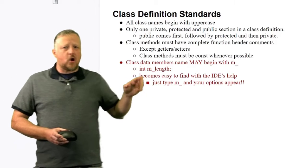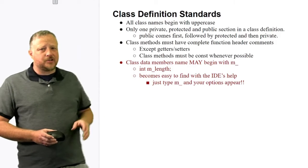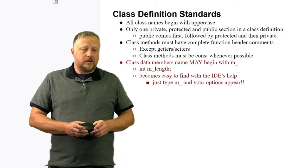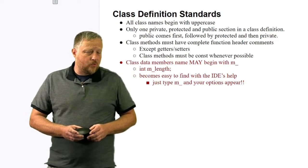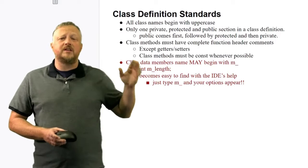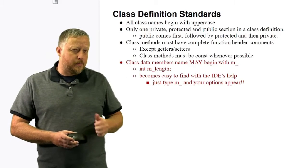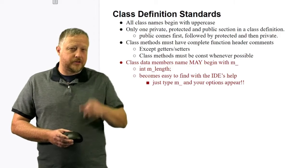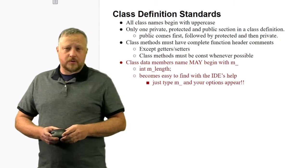Now, there's only one private, protected, or public section in a class definition. Yes, you actually can have more than one. And also, don't forget that by default—let's pretend you didn't put private—what is it going to go to? Is it going to be public, private, or protected? Which one is it? You should know that; if you don't, talk to us about it.